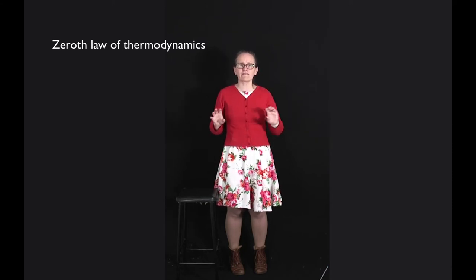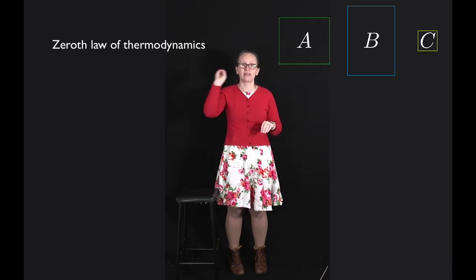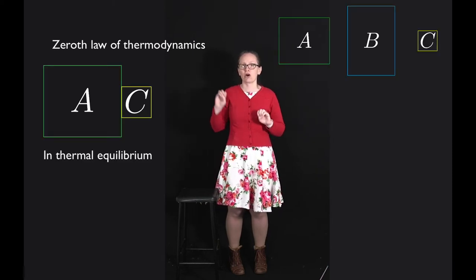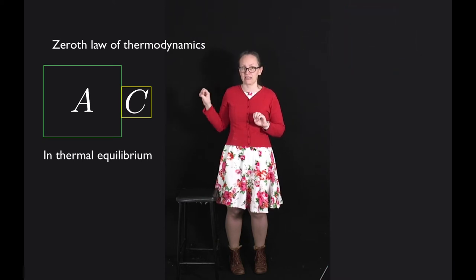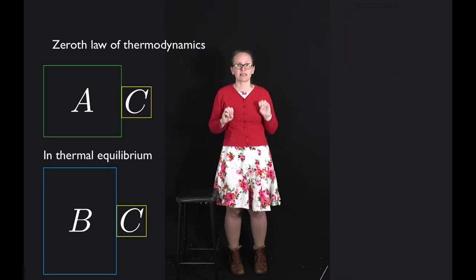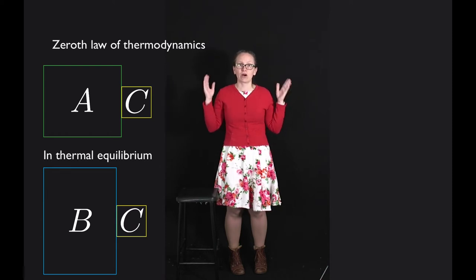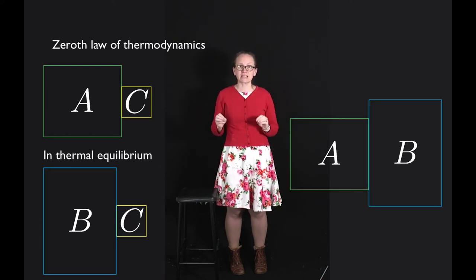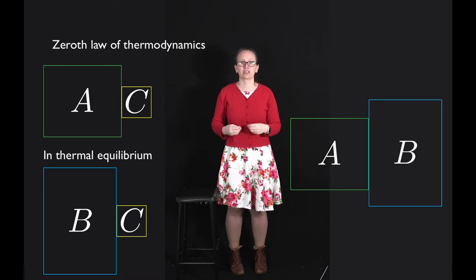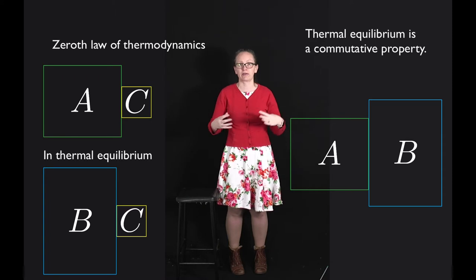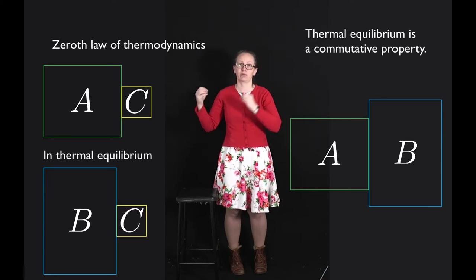The zeroth law of thermodynamics tells us that if we have three objects A, B and C, and object A is in thermal equilibrium with object C, and object B is also in thermal equilibrium with object C, then objects A and B must be in thermal equilibrium with each other. If you like mathematical terminology, you can say that thermal equilibrium is a commutative property.